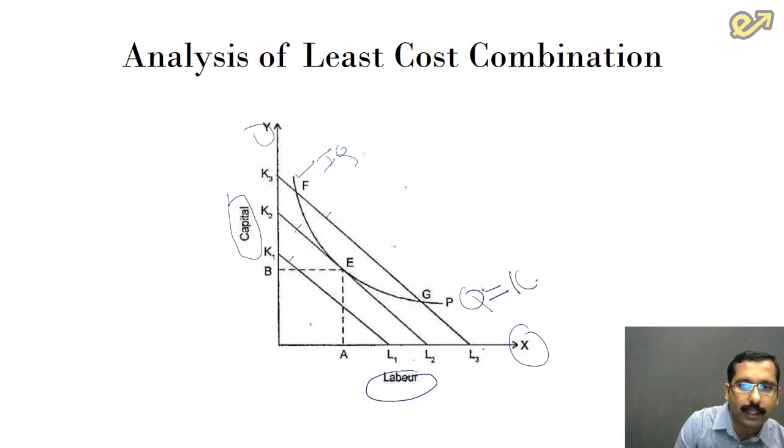Let us say Q here, the output that we are obtaining here is equal to 10 for the various combinations of capital and labor. Now we have the isocost curves—there are three isocost curves. All along these curves the cost remains constant. Like all of us know, when we move away from the origin, the value of these curves keeps on increasing.